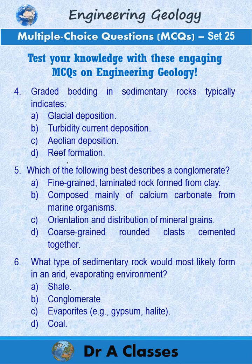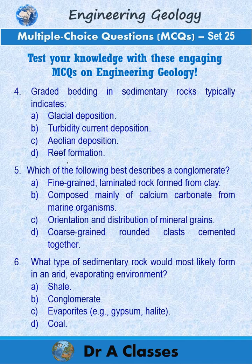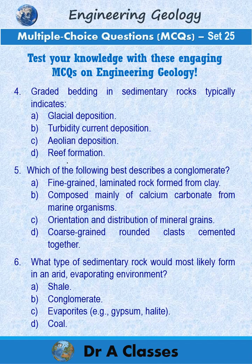Question 5. Which of the following best describes a conglomerate? A. Fine-grained laminated rock formed from clay. B. Composed mainly of calcium carbonate from marine organisms. C. Orientation and distribution of mineral grains. D. Coarse-grained rounded clasts cemented together.